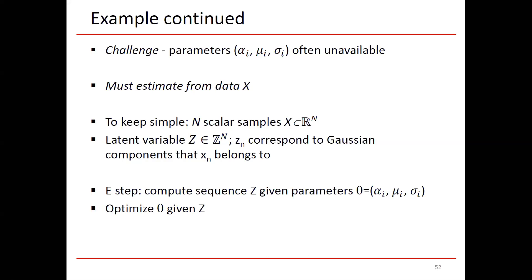Suppose to keep it simple, there are three components, so each zn is going to be either one, two, or three. Now what we're going to do, the E step, we're going to be computing a sequence z given the parameter. Given alpha i, mu i, and sigma i for the three parameters, i equals one, two, and three, we're going to calculate what's a reasonable latent sequence. In the second step, we're going to optimize the theta, the parameters, given z. We're going to move back and forth. Once we move back and forth a few times, typically we'll have a good estimate for this triple.